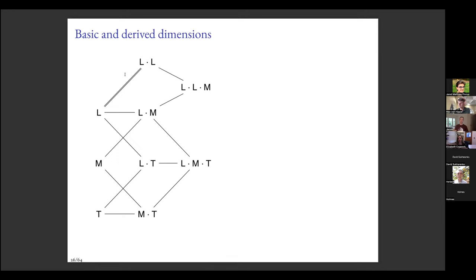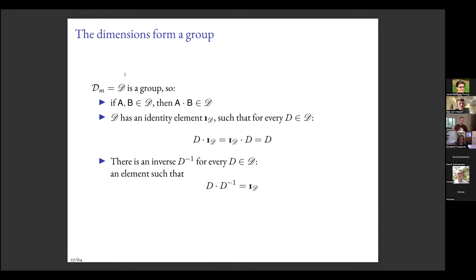Dimensions can be multiplied with themselves or each other: length times length gives length squared, length times mass gives a product of two dimensions. The set of dimensions forms a group: if any two dimensions are in the set D, so is their product. There's an identity element such that multiplying any dimension by it returns that dimension.